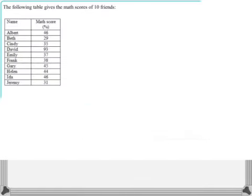We have the following table given with the math scores of 10 friends. So we can see we've got percentage grades 46, 29, 35, a lot of high grades there. There's one high grade, 93. So how are we going to sort out this data and represent it graphically as a box plot?